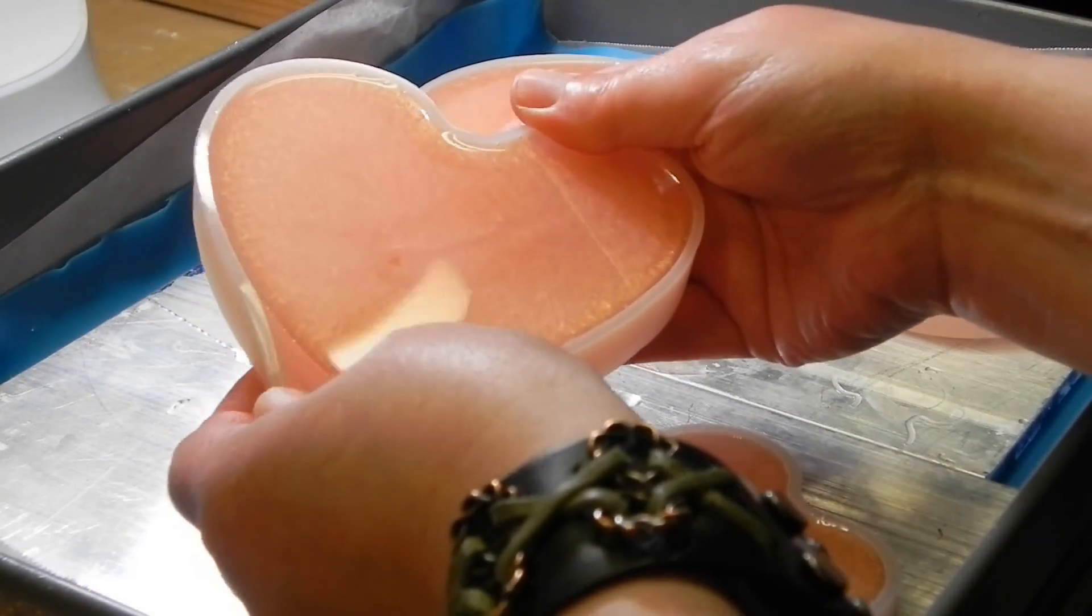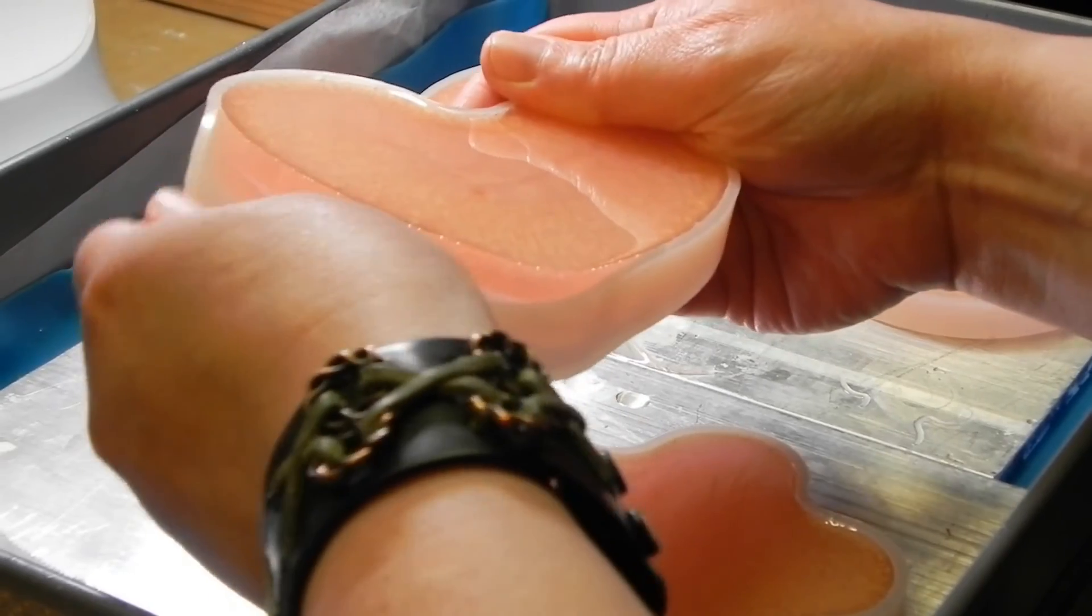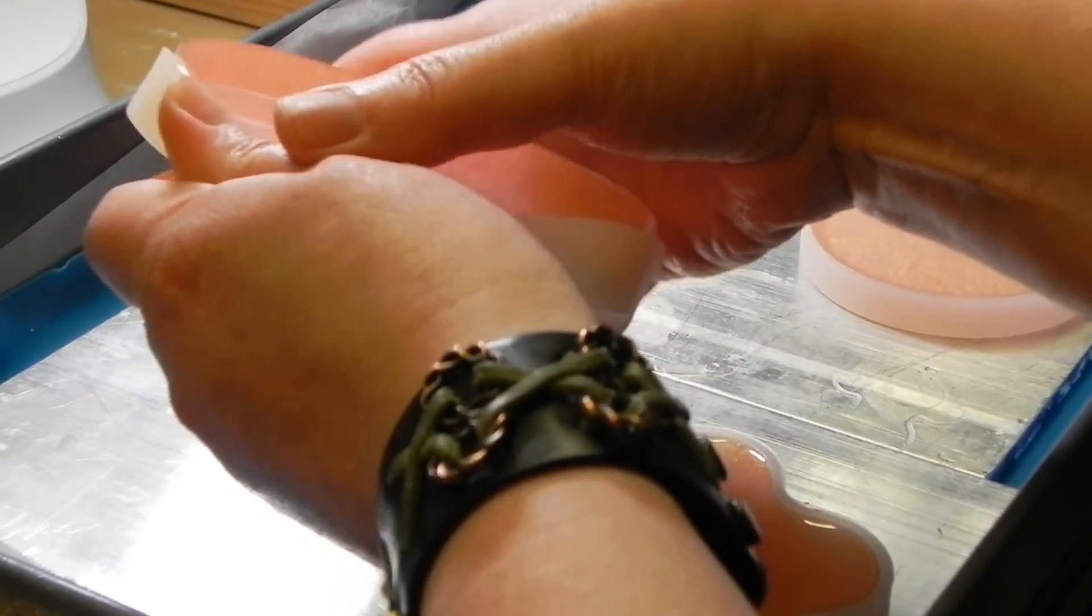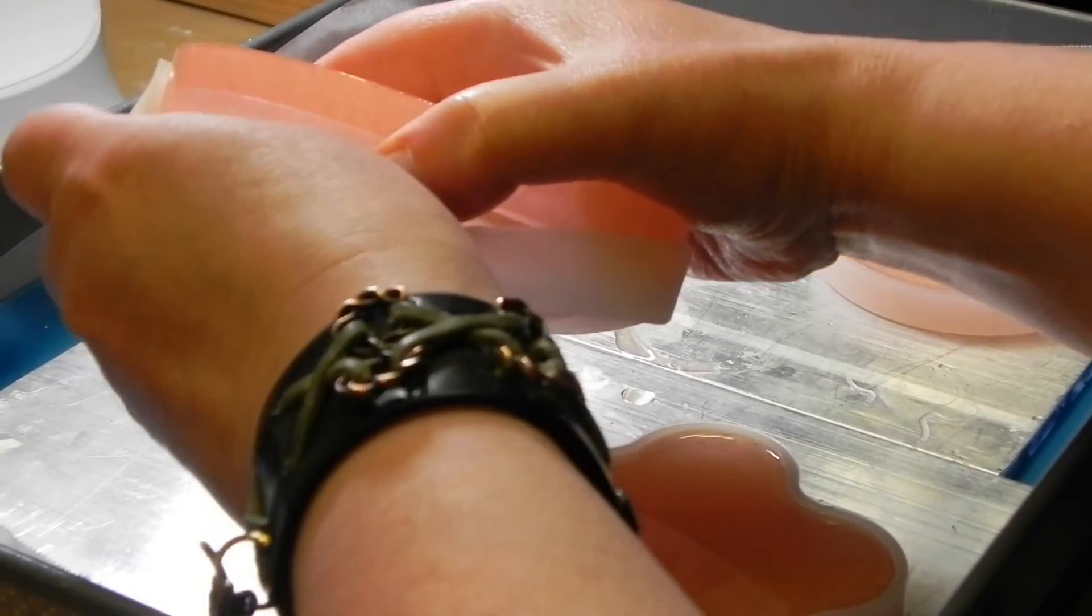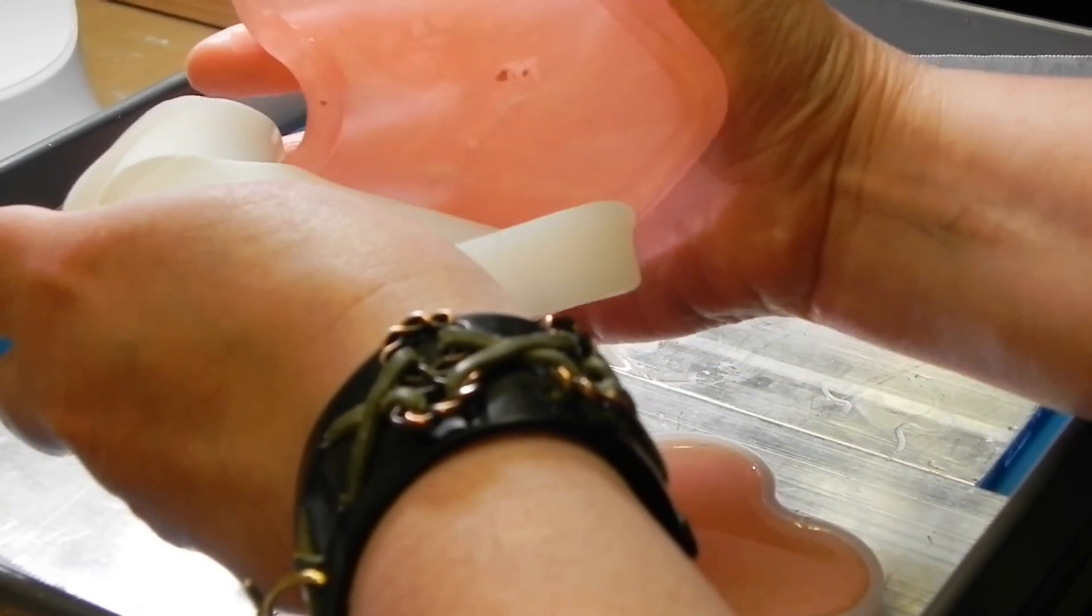Gently remove the cast from the mold. Silicone is a flexible material, but be careful not to tear it. There is a chance that even though the resin is hard, it is still slightly pliable, i.e. not fully cured.